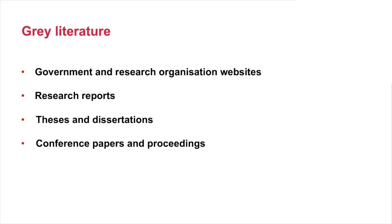We'll now look at grey literature. Grey literature refers to scholarly information that is not published in the traditional sense, and it is another alternative way of searching for scholarly information outside of databases and journal articles. Grey literature may be found in the form of government reports, conference papers or proceedings, research reports, guidance materials, or theses and dissertations. Grey literature can often be found on government or research organisation websites.